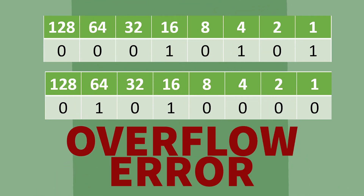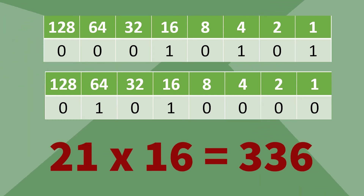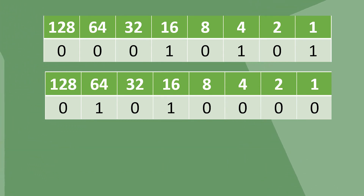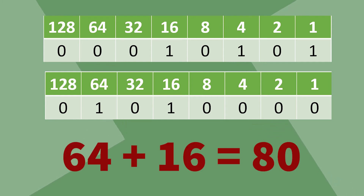This also creates an incorrect number. A left shift of 4 is the same as multiplying by 16, but 21 multiplied by 16 is 336, yet our result here only gives us 80 — so clearly an error has occurred.